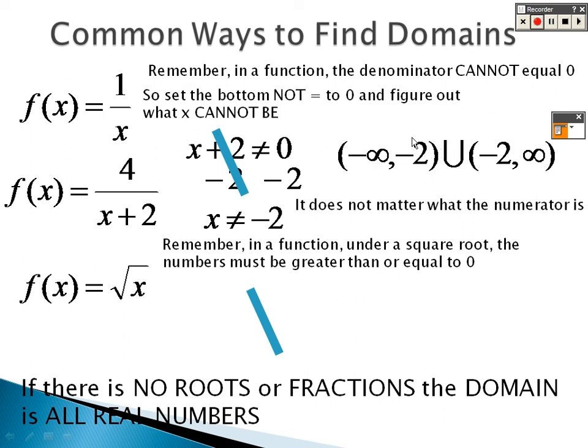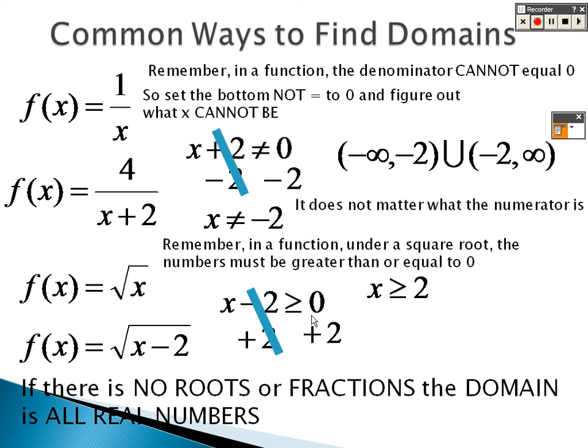This root, what you need to remember for square roots is that the number needs to be greater than or equal to 0. So the square root of x minus 2, what we're saying is x minus 2 needs to be greater than or equal to 0. So I add 2 to both sides, so we figure out that x has to be greater than or equal to 2.